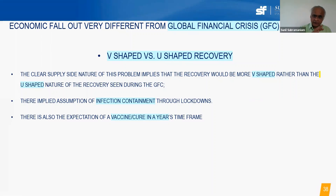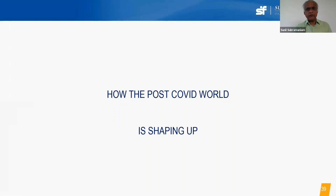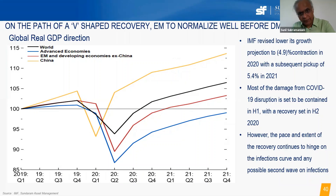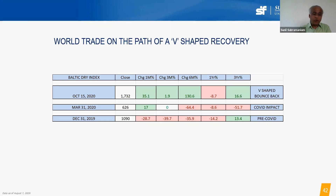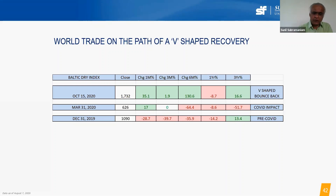There is a strong expectation of a V-shaped global recovery versus the U-shaped recovery of the previous crisis, based on the hope that infection containment through lockdowns will succeed and a vaccine or cure will be in place within about a year. The IMF expects the world to post a sharp recovery, with China leading the way, followed by emerging countries recovering faster than the developed world. The Baltic Dry Index, which dropped 40% during COVID, has almost tripled in value — a strong signal of V-shaped recovery.